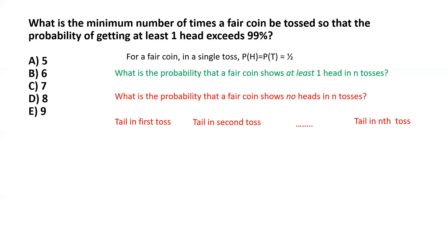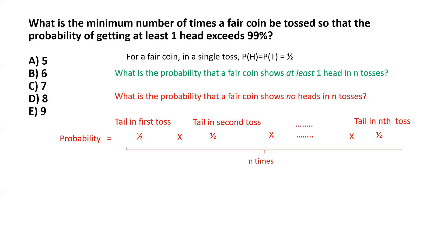We know that the probability of each of those individual tail events is one half, because the coin is fair. So the probability of getting a tail in the first toss is one half, in the second toss is also one half, and so on up to the nth toss. Since each toss is independent, we can multiply the probabilities, and the probability of the complementary event turns out to be one half to the power n.